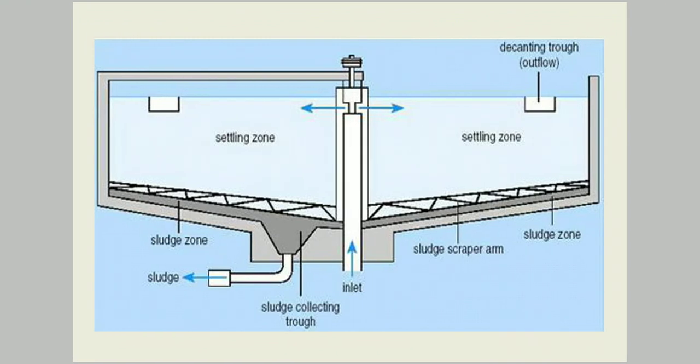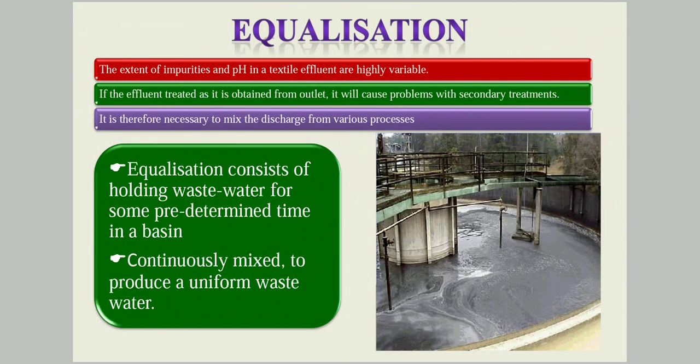This is a typical settling or sedimentation tank — a radial settling tank where wastewater comes through the middle section and flows radially. It is allowed to stay for some time so that the suspended matter settles. The suspended matters are then scraped by a mechanical scraper and brought to the hopper, where the sludge is removed by pumping out. Next is equalization.